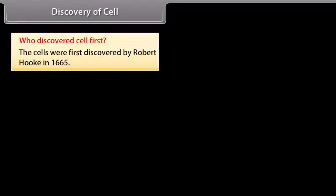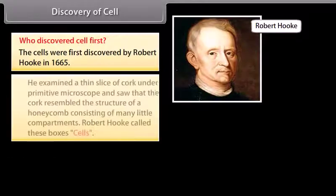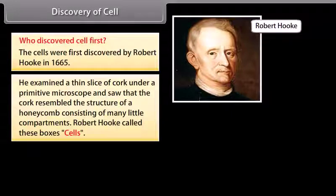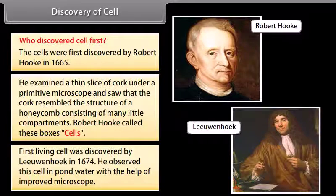Discovery of cell. Who discovered the cell first? Cells were first discovered by Robert Hooke in 1665. He examined a thin slice of cork under a primitive microscope and saw that the cork resembled the structure of a honeycomb consisting of many little compartments. Robert Hooke called these boxes 'cells.' The first living cell was discovered by Leeuwenhoek in 1674, who observed this cell in pond water with the help of an improved microscope.